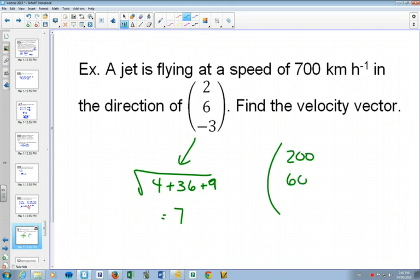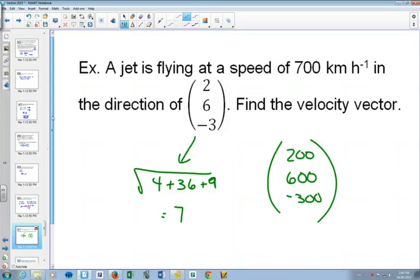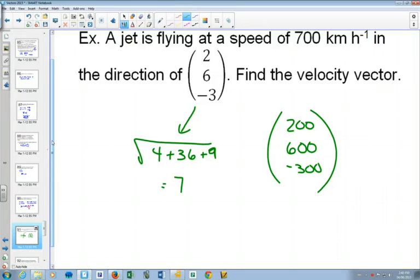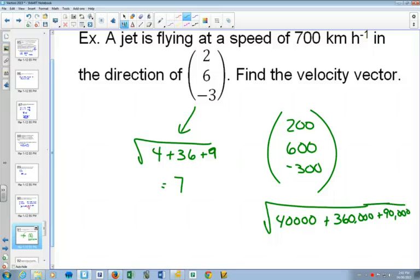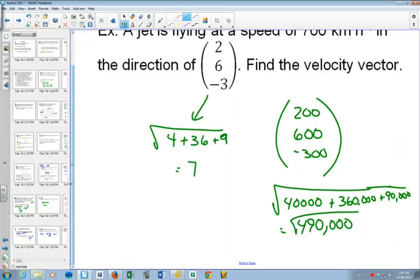So if we had 200, 600, and negative 300, then what we're going to get is, when we square this, 40,000 plus 360,000 plus 90,000, which will give us 490,000 and the square root of that is equal to 700.